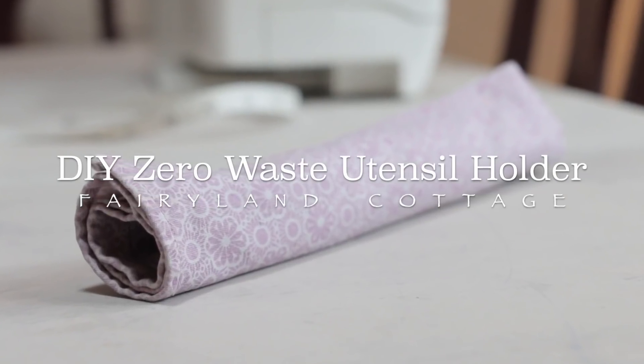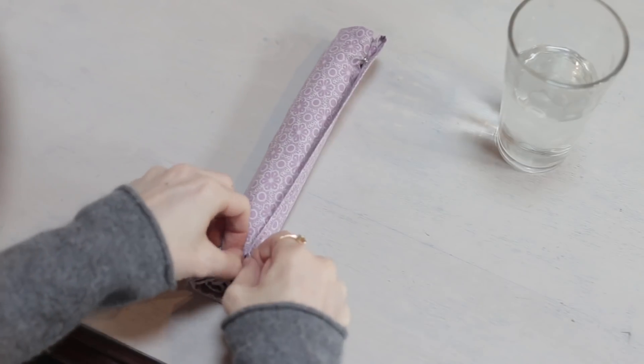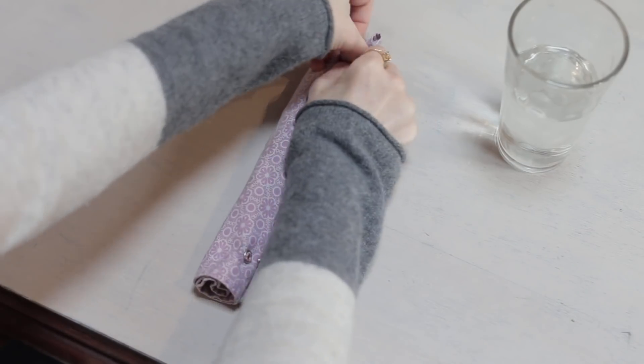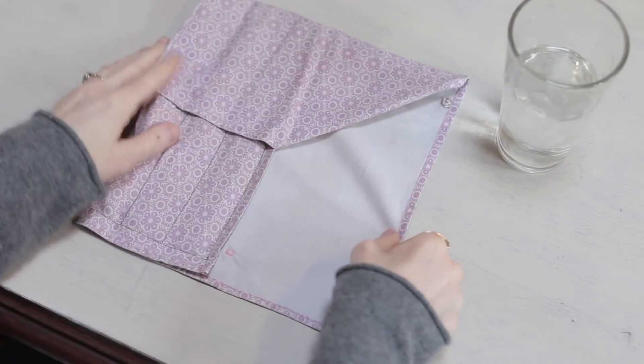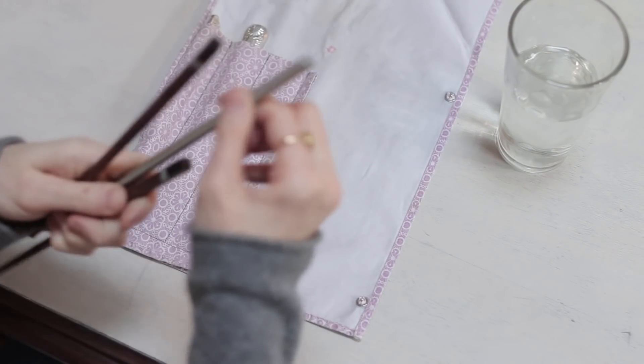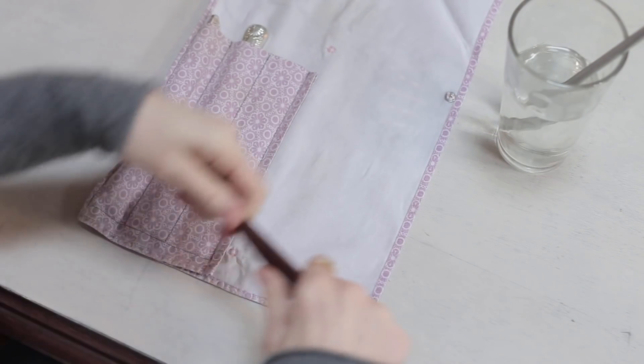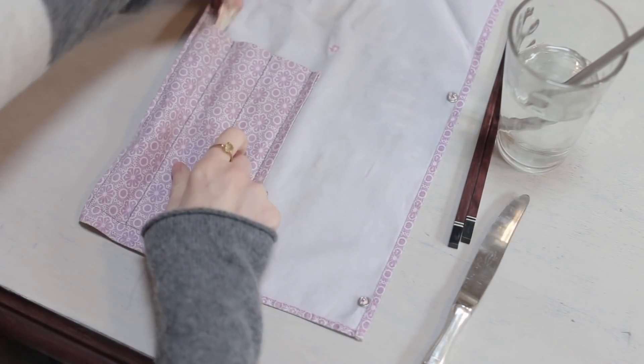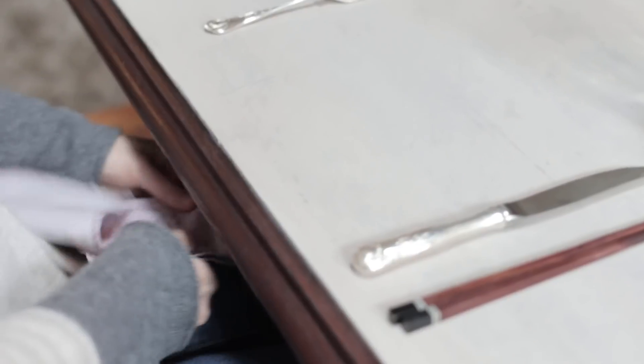Hello there and welcome to Fairland Cottage. Thanks very much for joining me here today where I'm going to show you how I made a very simple utensil holder that you can bring with you on the go so that you don't have to be using any plastic cutlery or plastic straws, and it also doubles as a napkin.